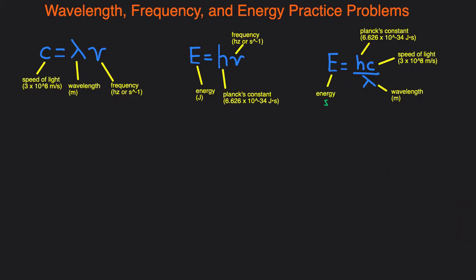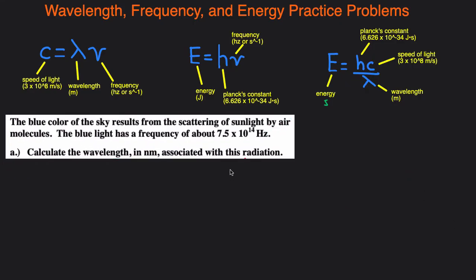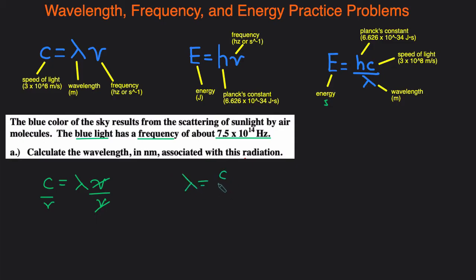In the next question, it says that the blue color of light results from the scattering of sunlight. It says blue light has a frequency of 7.5 times 10 to the 14th hertz, and we have to calculate the wavelength in nanometers associated with this radiation. So this is the opposite — we have the frequency and have to solve for the wavelength. Since we're dealing with wavelength and frequency, we use the first equation: c equals wavelength times frequency. To isolate the wavelength, we divide both sides by frequency, giving us wavelength equals c divided by frequency.